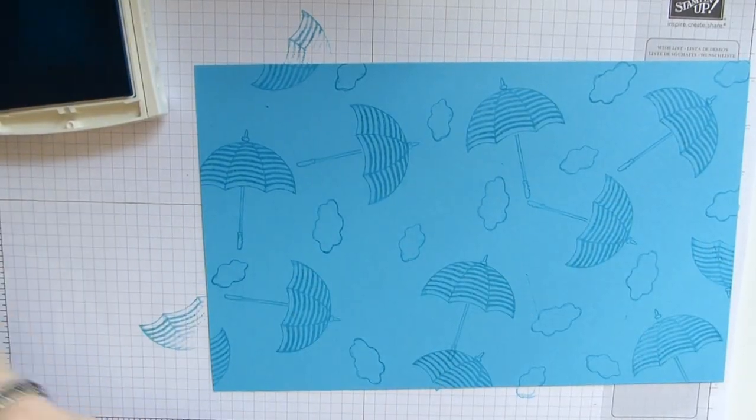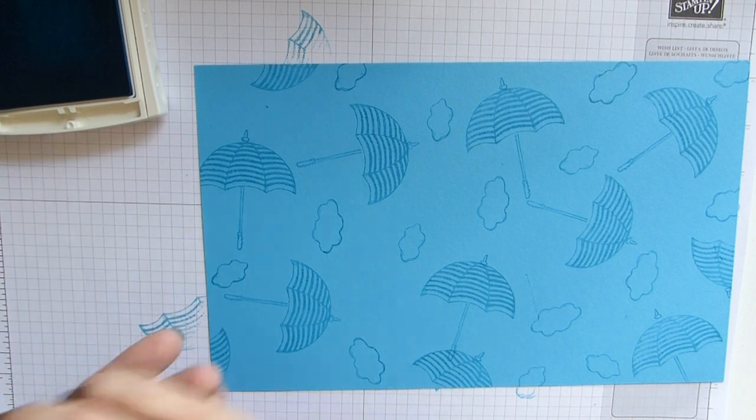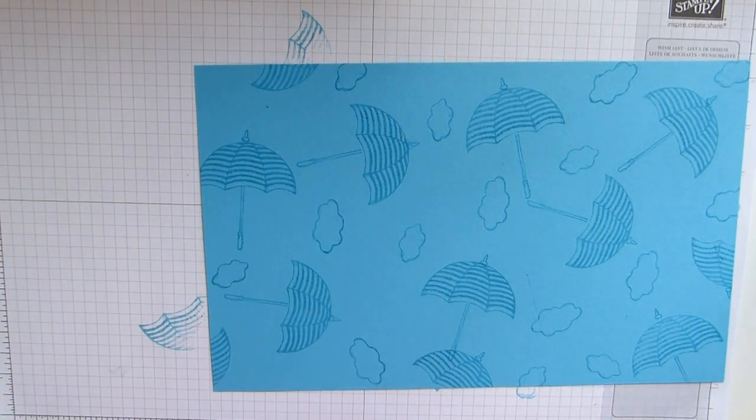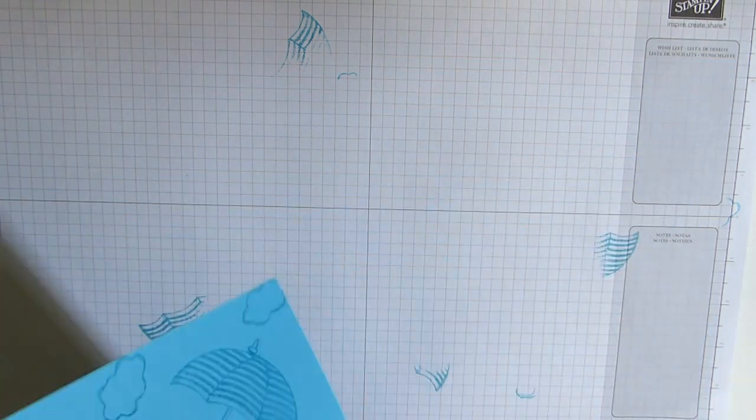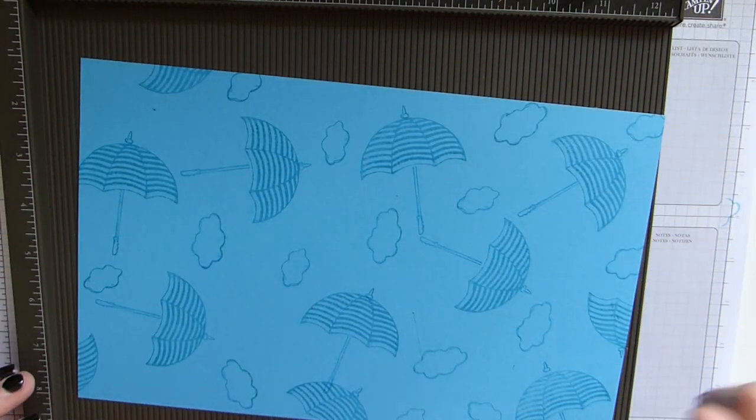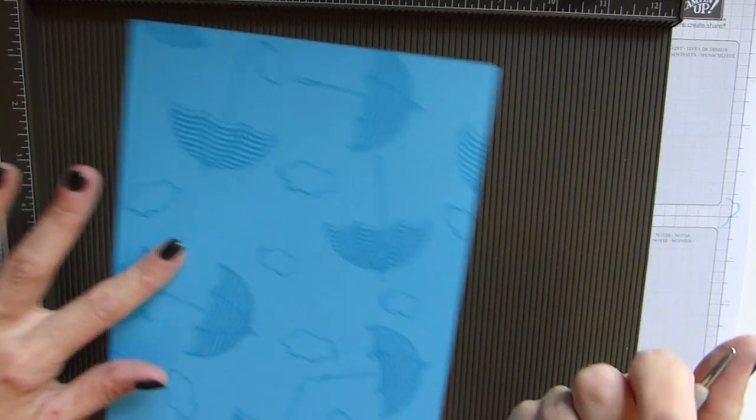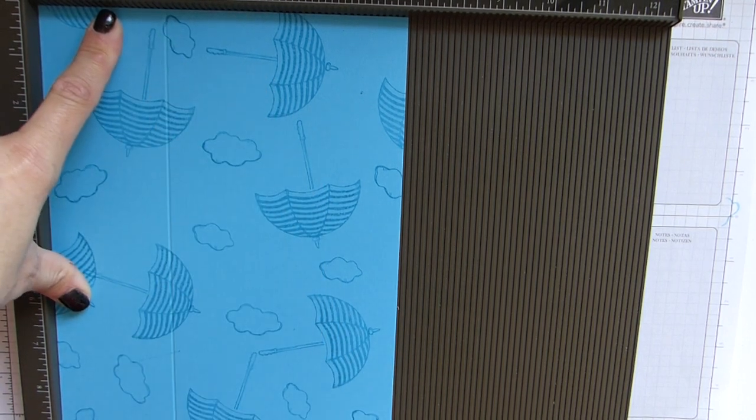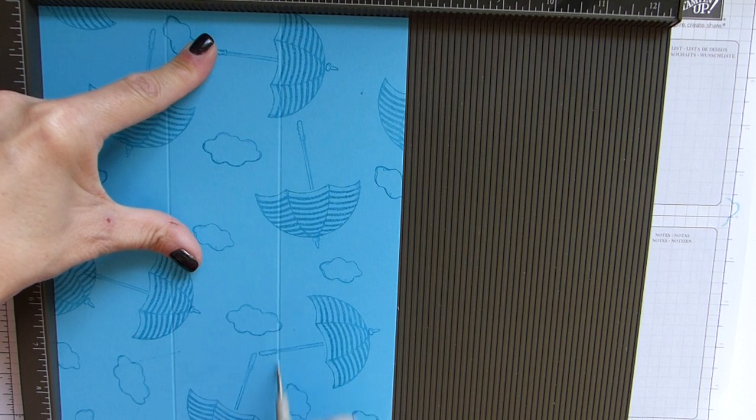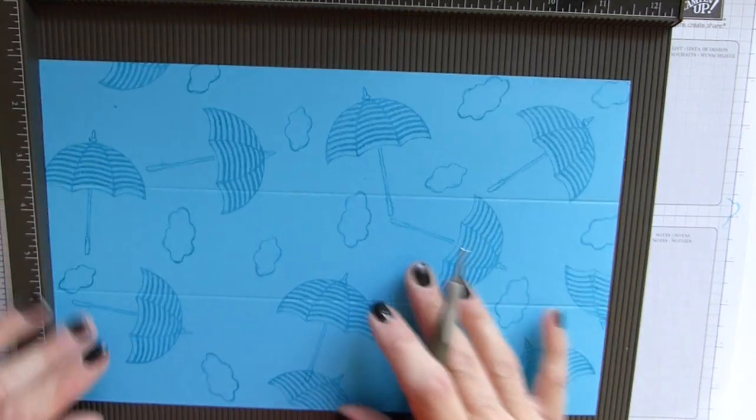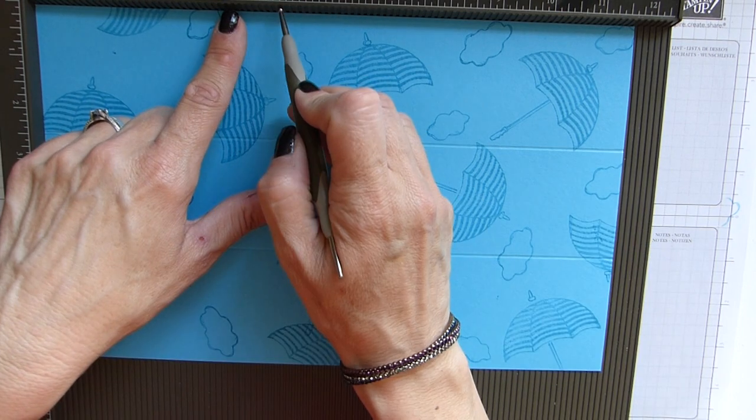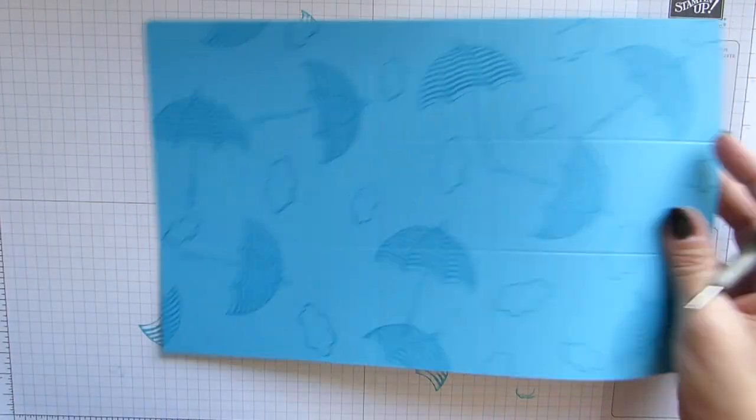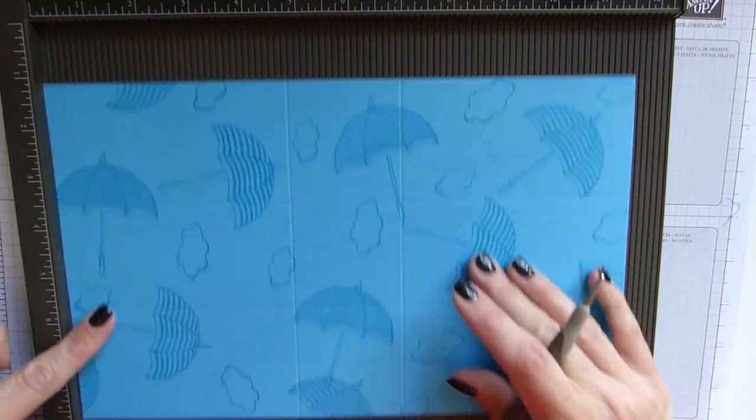Now we can bring in our scoring board. On the seven and a quarter side, we need to score at two and a half inches and four and three quarters. Then we rotate and we simply score at four and three quarters and seven.